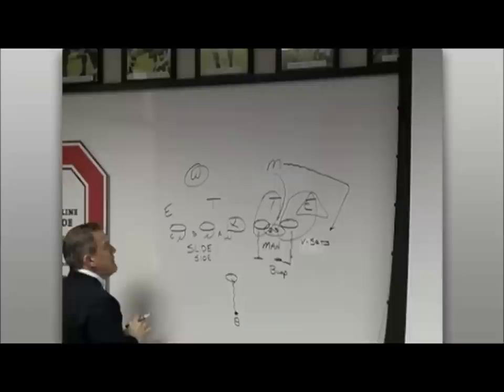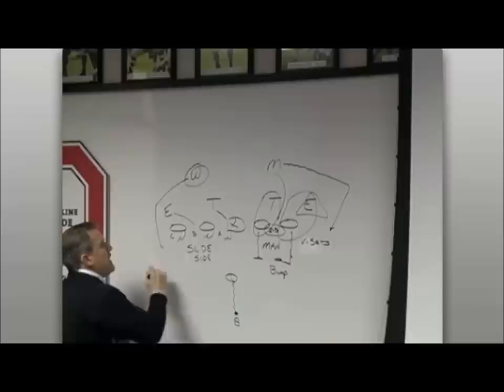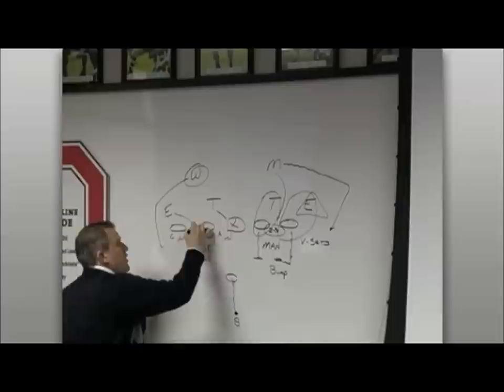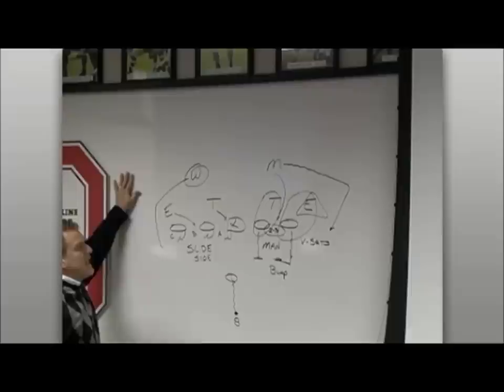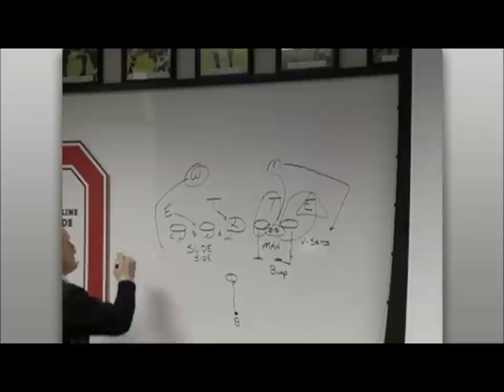Okay, on the slide side again, we're A, B, and C gap integrity. So if we get inside rush and the wheel off the edge, we have that protected because we're all gap sound. If somebody comes from outside this box, this six-man box, somebody that's not in our count, so they want to bring an extra rusher, maybe it's a corner. That brings a fourth rusher to this side.